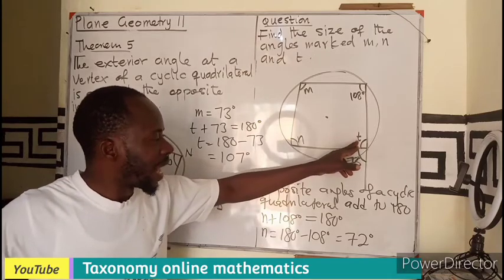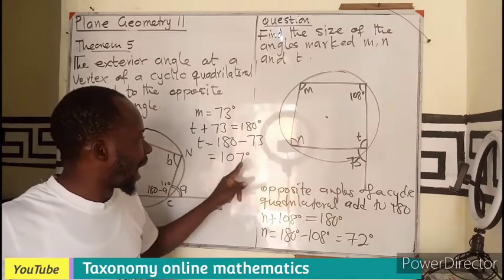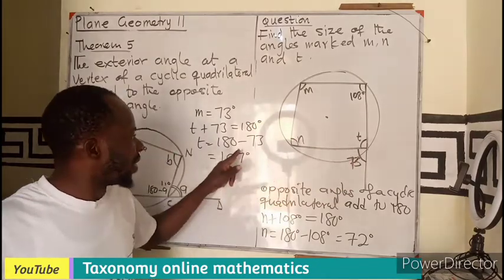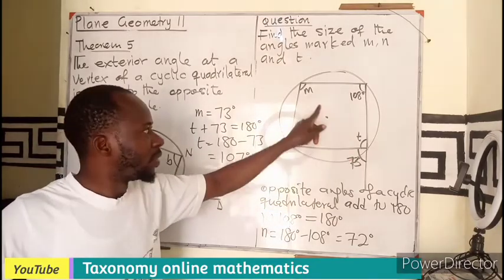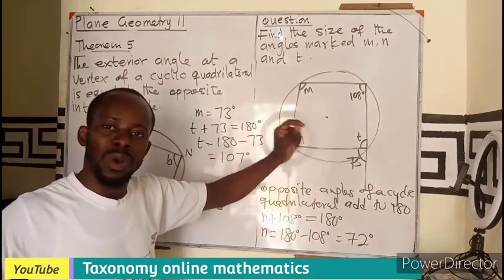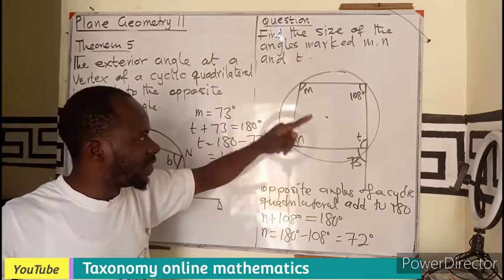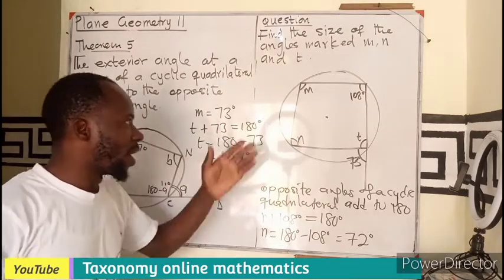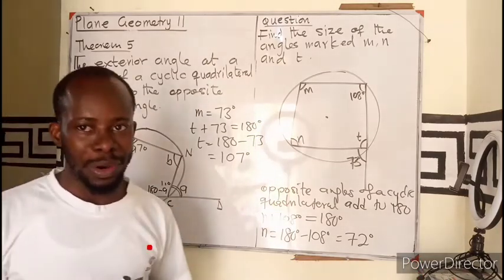Don't forget we can still add this and this in order to get our 180. You see this and this are also on a straight line which is the same value as this plus this. This plus this will also give us 180. Therefore M plus T equals 180 where the M is also 73. So this is one of the property or the theorems which we use under circle theorem. I believe you get the concept.